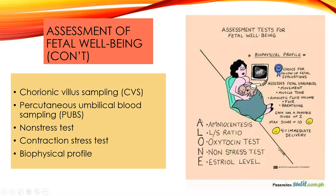Other tests include chorionic villus sampling done very early on, and percutaneous umbilical blood sampling. A non-stress test brings the woman in, puts her on the monitor, and looks for specific fetal heart rate characteristics. A contraction stress test causes contractions by giving medications like Pitocin, then observes how well the baby tolerates them. A biophysical profile brings the mom in for an ultrasound combined with a non-stress test to give the baby a score, telling us how well the baby is tolerating the uterine environment.